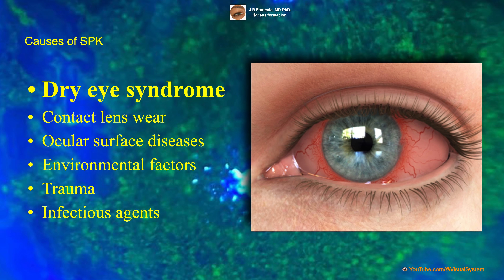Dry eye syndrome is one of the most common causes of superficial punctate keratitis. It occurs when the eyes do not produce enough tears or when the quality of the tears is poor. This can lead to inflammation and damage to the corneal epithelium, resulting in the formation of superficial punctate keratitis lesions.